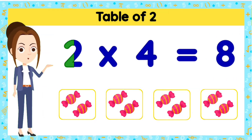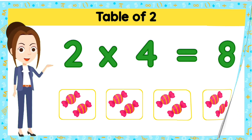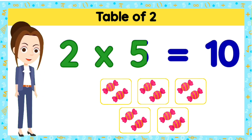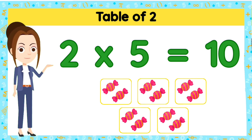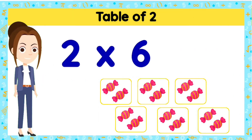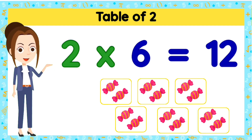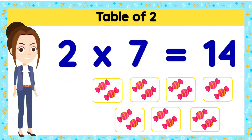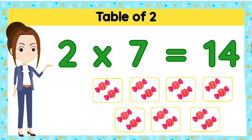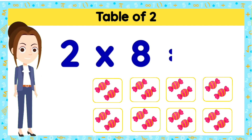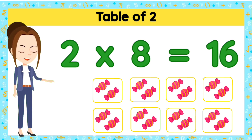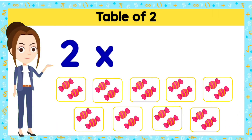Two fives are ten. Two sixes are twelve. Two sevens are fourteen. Two eights are sixteen. Two nines are eighteen.